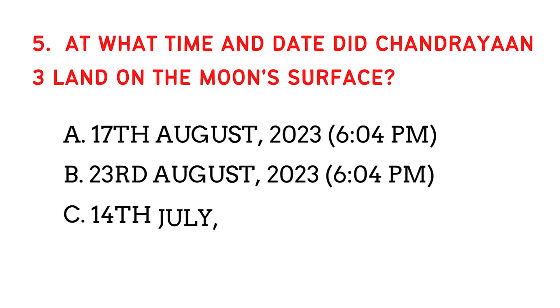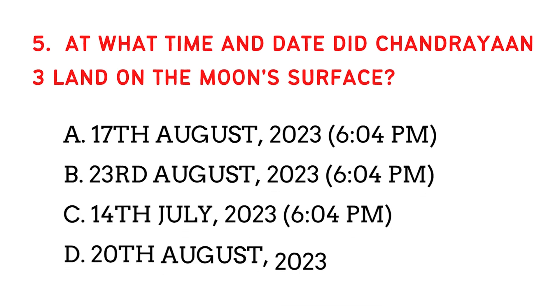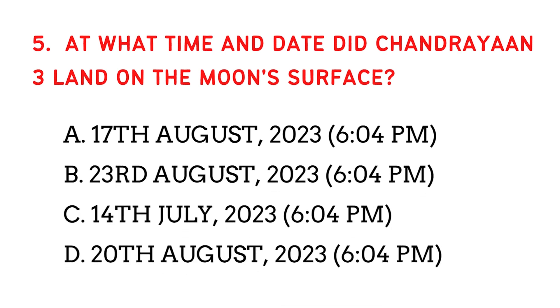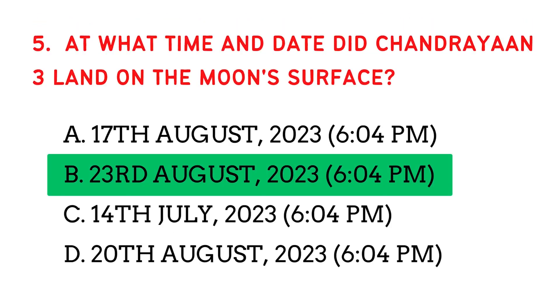At what time and date did Chandrayaan 3 land on the moon's surface? The answer is 23rd August 2023 at 6:04 pm.